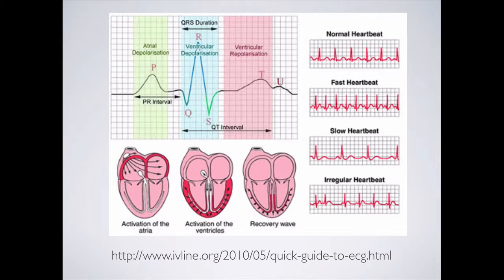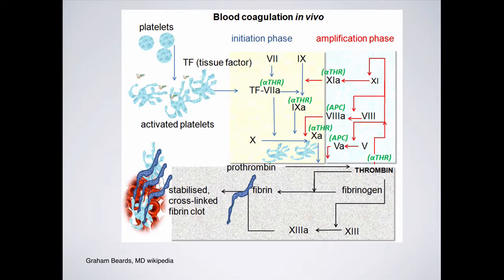Just like EKGs — where each part from the P wave to the QRS complex and the T wave equates with different parts of the cardiac cycle and reflects the electrophysiology, and different waveforms and beat-to-beat variabilities tell us whether someone has underlying pathology — thromboelastography does the same thing for your in vivo coagulation cascade, going from the platelets to tissue factor activation up through the initiation and amplification phases, all the way to the conversion of prothrombin to thrombin and subsequent clot formation.